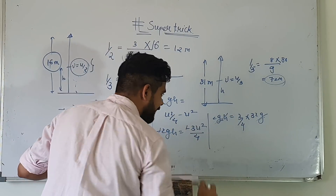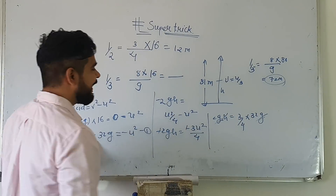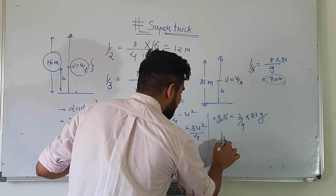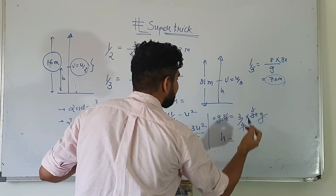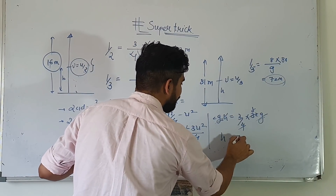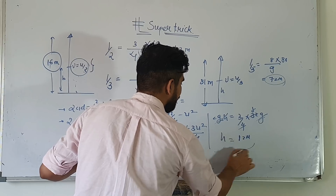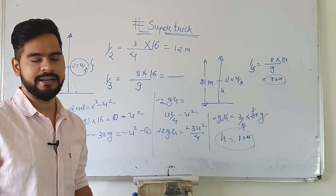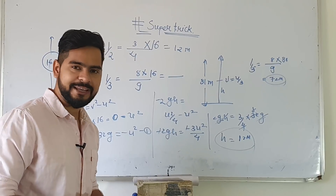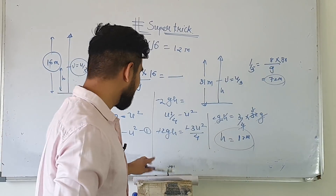Applying again: (u/2)² minus u² = minus 2gh, so u²/4 minus u² = minus 2gh. Taking LCM: minus 3/4 u² = minus 2gh. The negatives cancel: 2gh = 3/4 × u². From equation 1, u² = 32g. The g cancels out, and making h the subject: h = (3 × 32) / (4 × 2) = 96/8 = 12 meters.